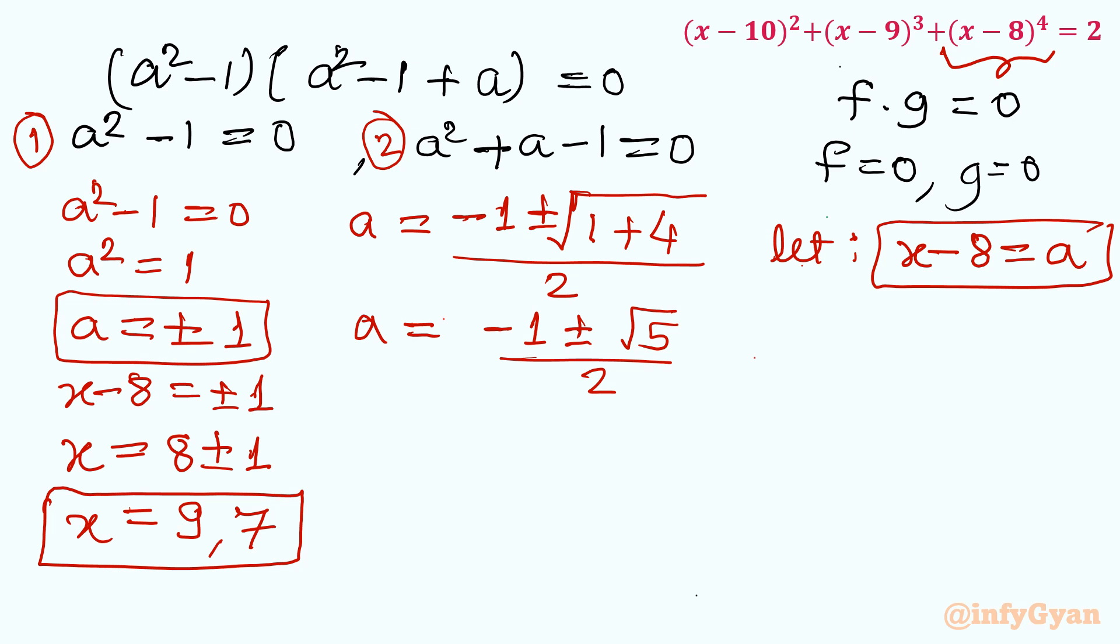Now I will write this value as (-1 ± √5)/2. This is our a. Now I will do the same job. I will write again in place of a, x - 8, so I can write x - 8 = (-1 ± √5)/2. Add 8 to both sides, so x will become 8 plus in bracket (-1 ± √5)/2. So you can see it is 16, 16 - 1 so 15. So our final value would be (15 ± √5)/2.